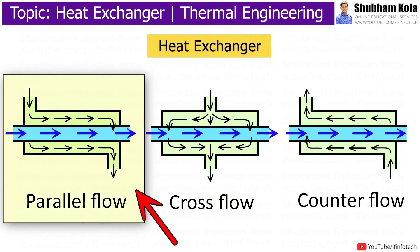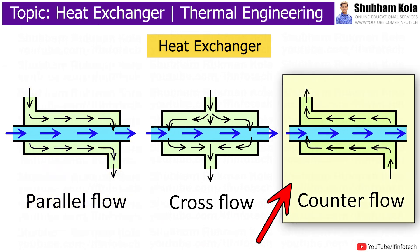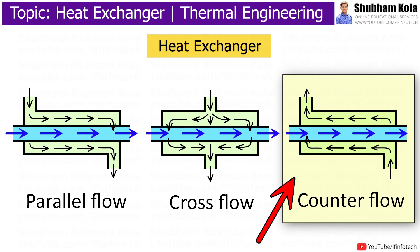Parallel flow occurs when both shell side and tube side mediums enter the heat exchanger from the same end and flow to the opposite end. In counter flow heat exchangers, the two flowing mediums flow in counter direction to each other — each enters at opposite ends and is discharged at opposite ends. Counter flow heat exchangers are the most efficient type of heat exchanger.